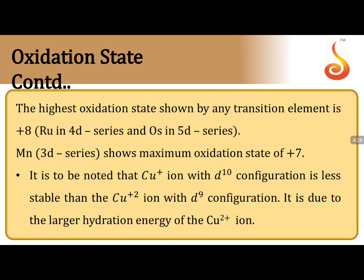In the periodic table, which transition elements exhibit the highest oxidation state? Ruthenium and osmium show +8 oxidation state in compounds like RuO₄ (ruthenium tetroxide) and OsO₄ (osmium tetroxide). Manganese is the only 3d series element which can show the maximum oxidation state of +7 — a very important point frequently asked in JEE and NEET examinations.